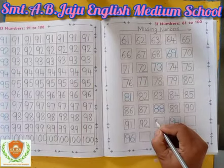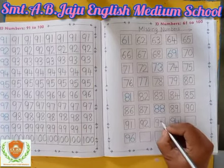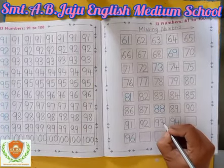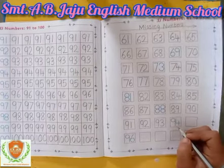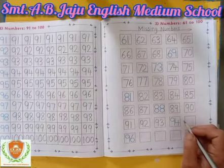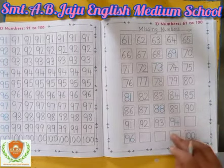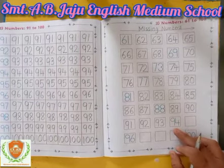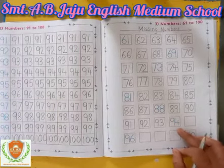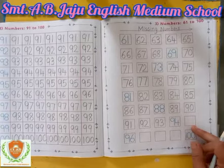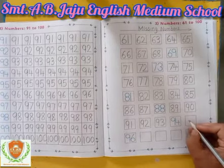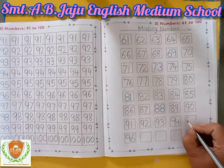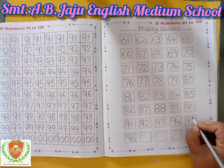Write down first 9, then write down 3. Which number is that? 93. After 93, which number will become? Here — 94. This is 94. Now after 94, which number will become? Write down 9, then write down 5.